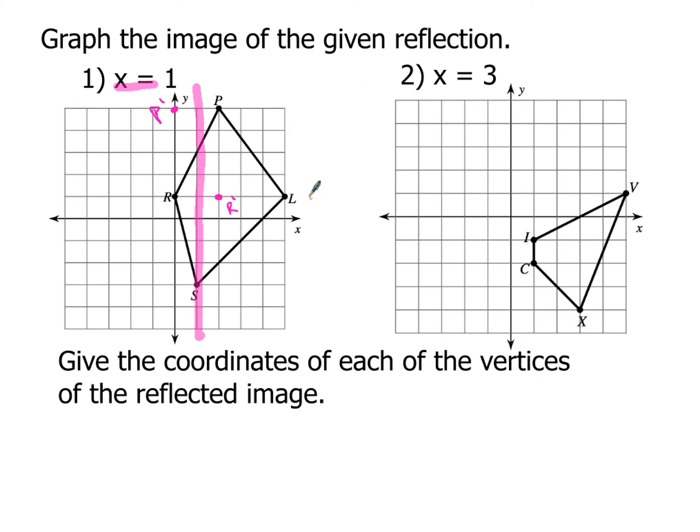Now moving over to point L. The reflection of L is going to be one, two, three, four units away from my line. That means I've got to be four units to the left of the line x equals one. So one, two, three, four. So L prime is going to be located right there at the coordinates that you see on your screen.